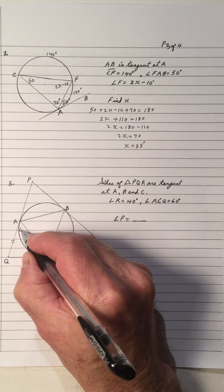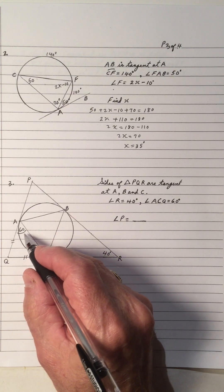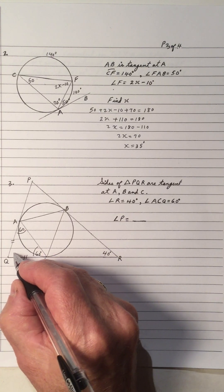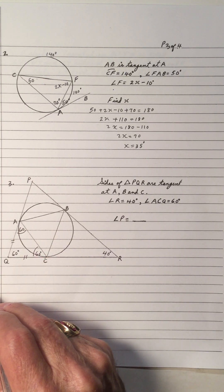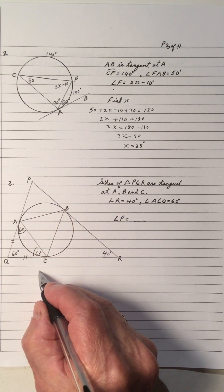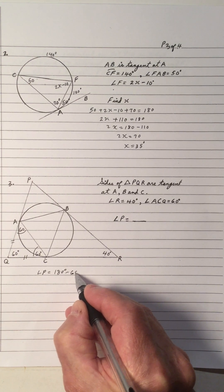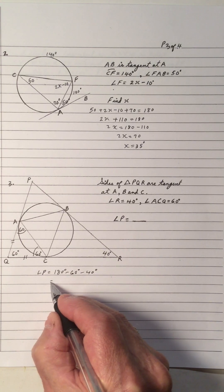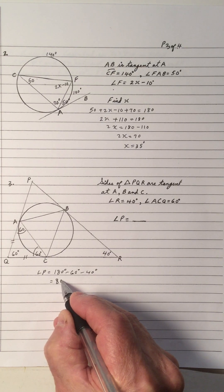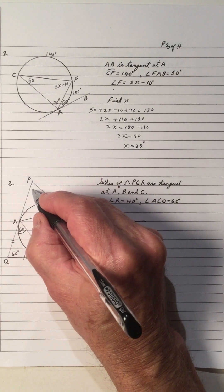So this angle is 60, and this angle is also 60. Since the angles of that sub-triangle add up to 180, and 60 plus 60 is 120, that makes the third angle 60 degrees. Now I have two angles of triangle PQR: angle P equals 180 minus 60 minus 40, which gives 80 degrees.